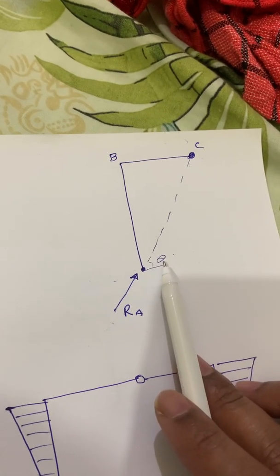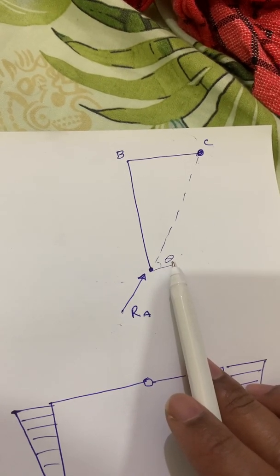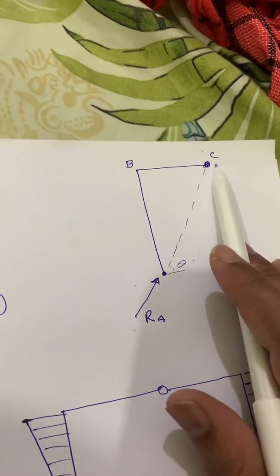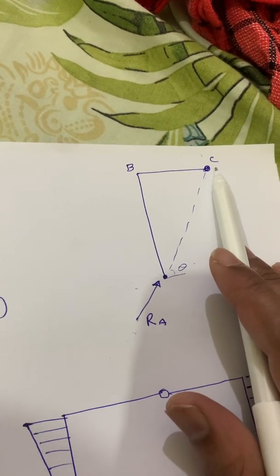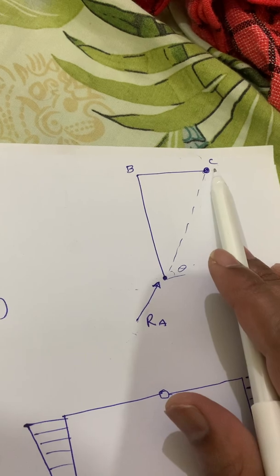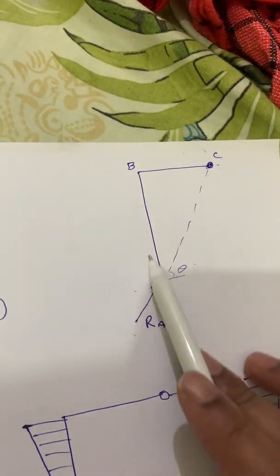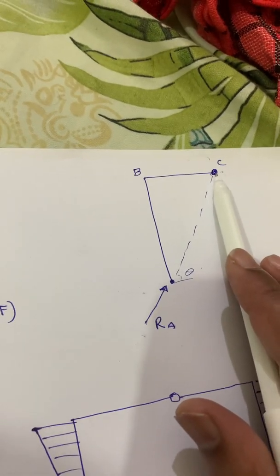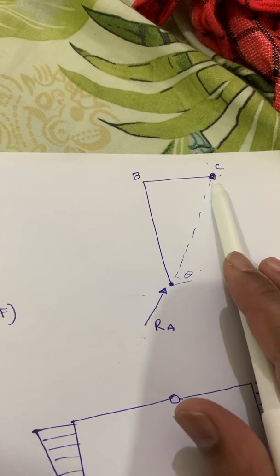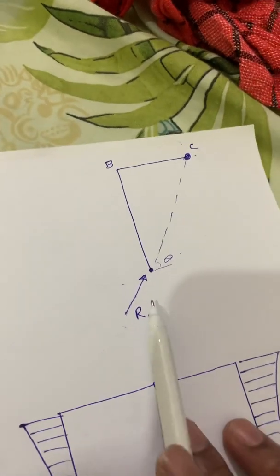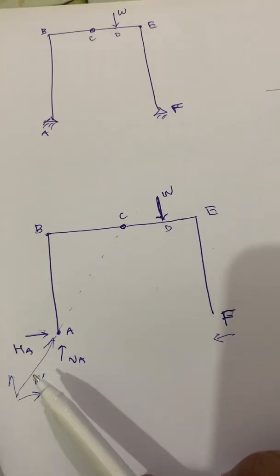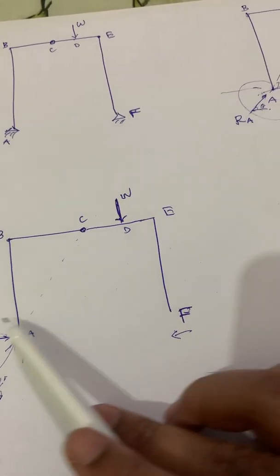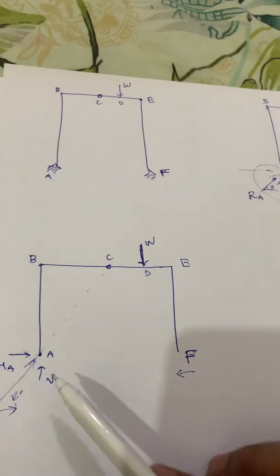Looking at the equilibrium of sub-structure A-B-C, we realize that the line of reaction force Ra must pass through the hinge point C, hence there can be no resultant moment about this hinge. There are no other external forces on this sub-structure, which is why Ra has to pass through C to create zero resultant moment about that point. It is more convenient to separate the reaction Ra into horizontal component H and vertical component V.